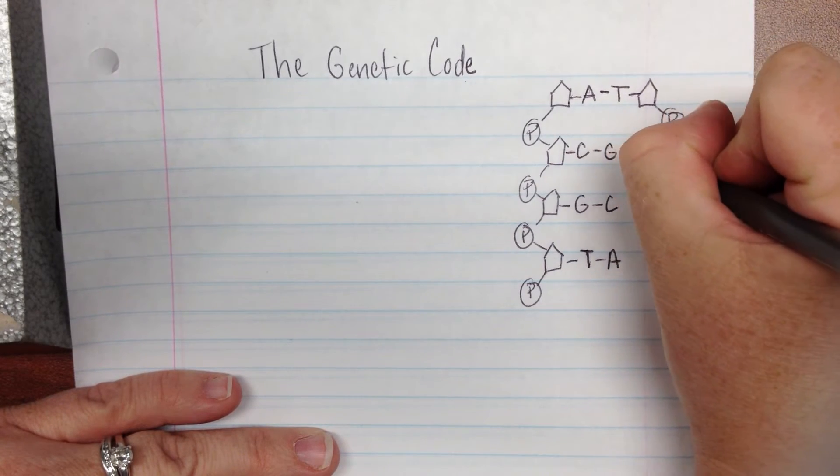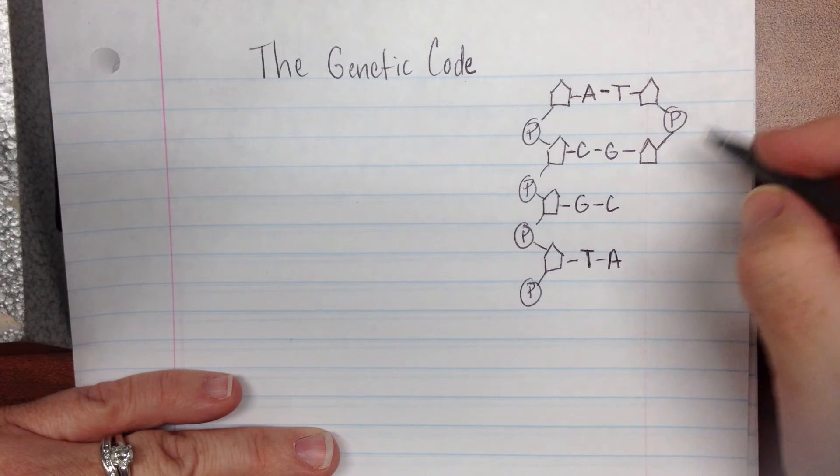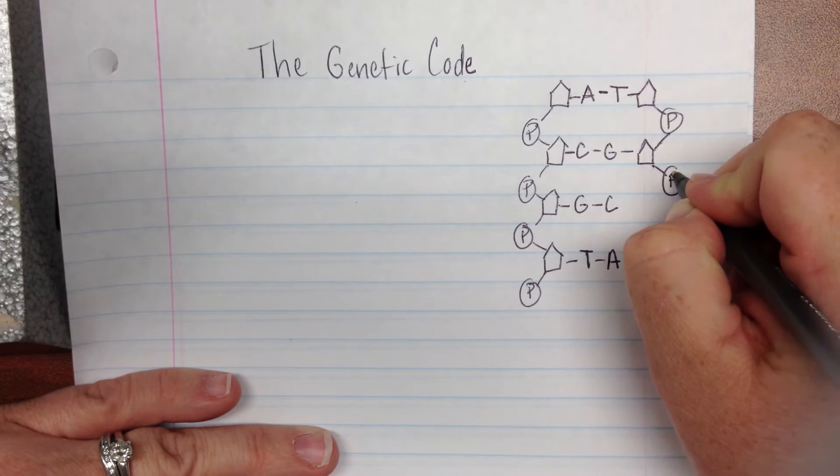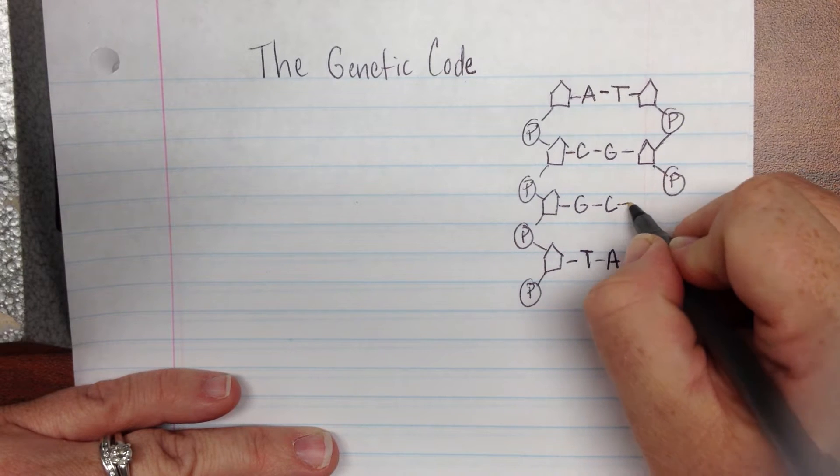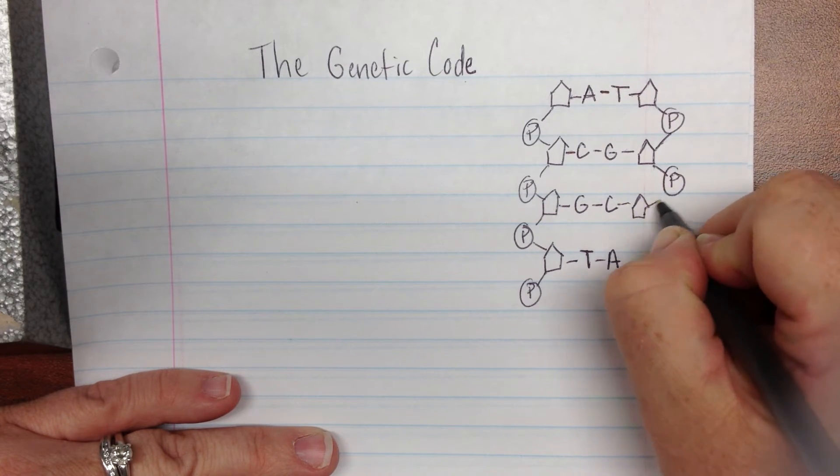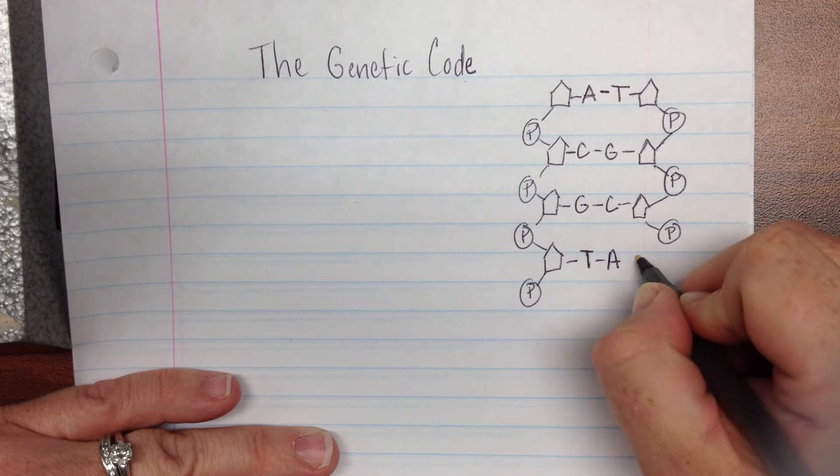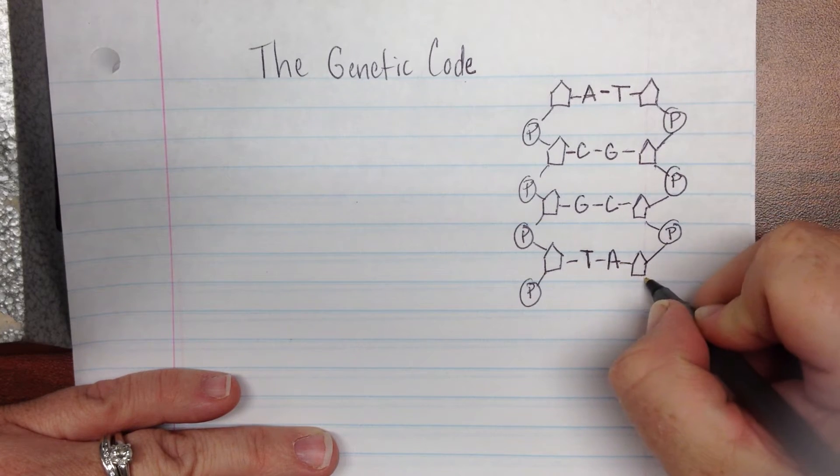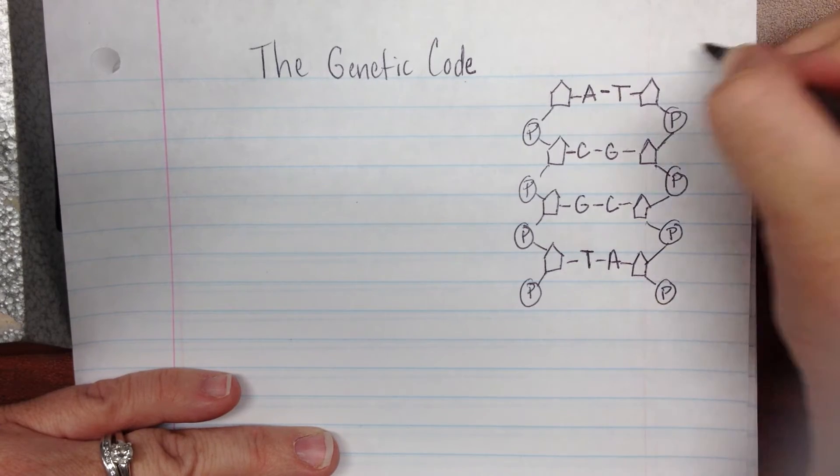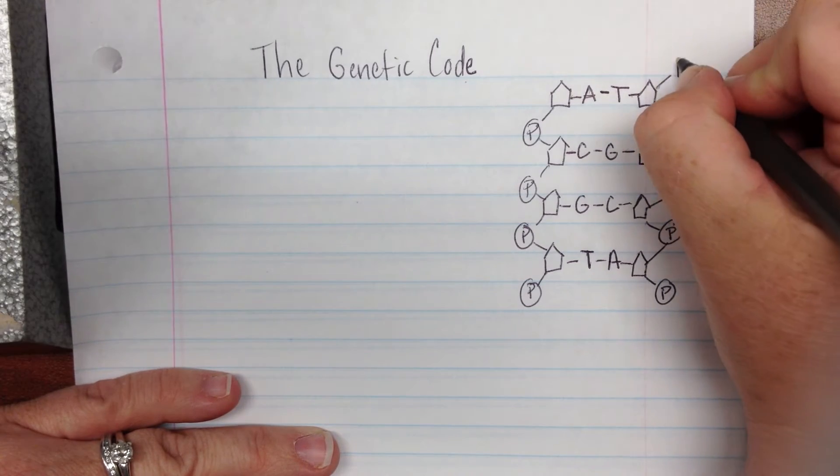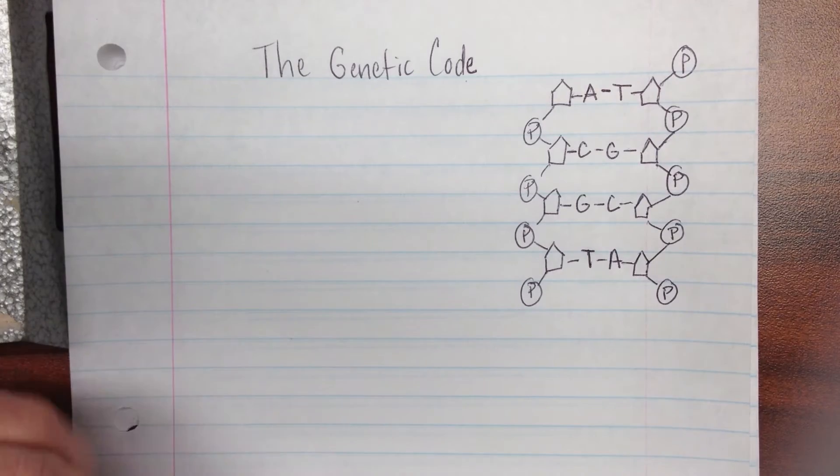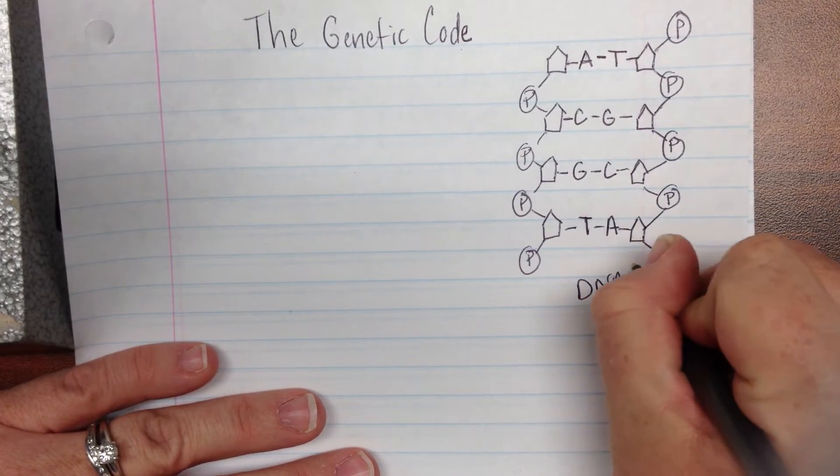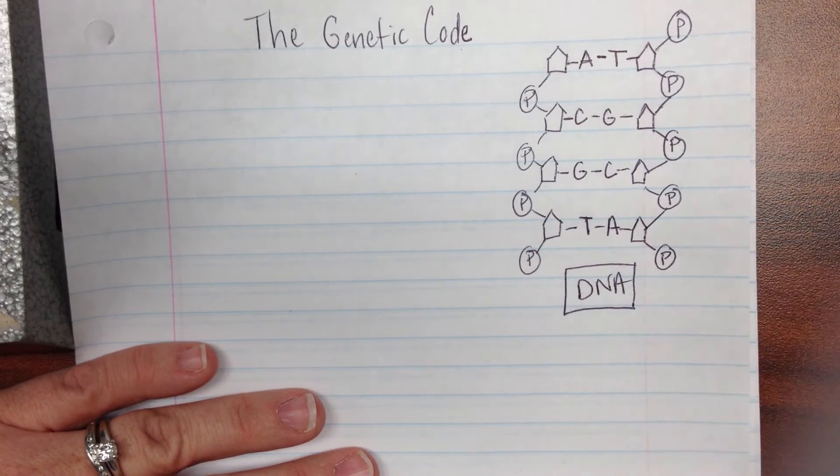And then on the other side, remember A always bonds with T, C bonds with G, G bonds with C, T bonds with A, and to have our full side, we need to bond that to a sugar, which bonds to a phosphate. This bonds to a sugar, which is bonded to that phosphate, and we have another phosphate over here, and sugar, phosphate, and sugar. We could also add our phosphate up here. And I'm going to label this, make sure we know that this is DNA.